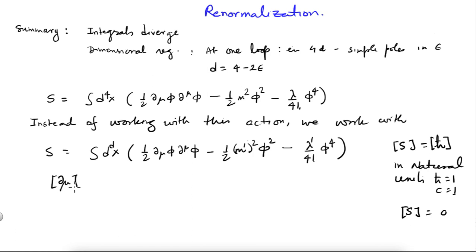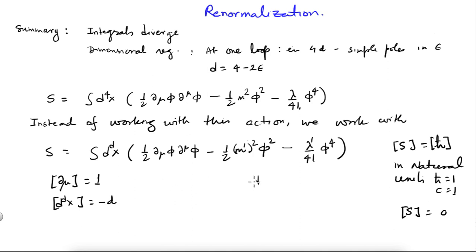The measure d^d x has mass dimension minus d, because each dx_i has dimension minus 1, and there are d of them, giving a total of minus d.